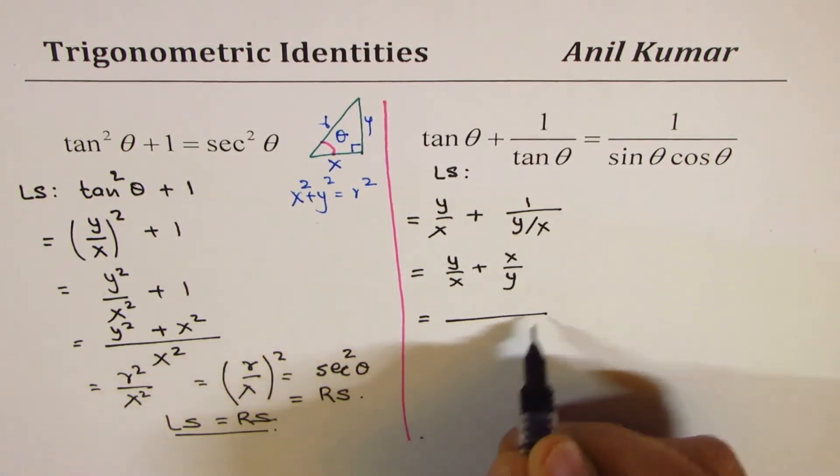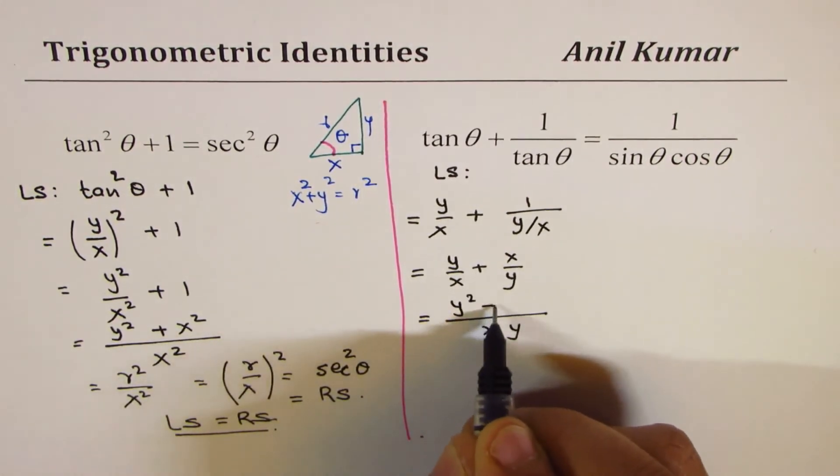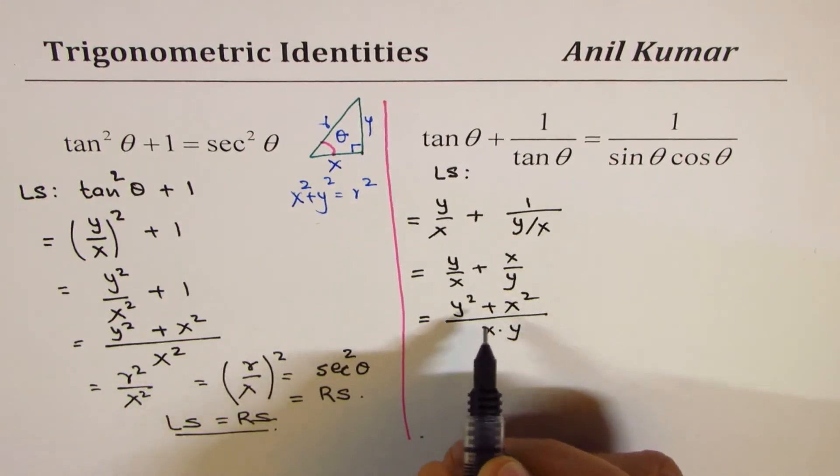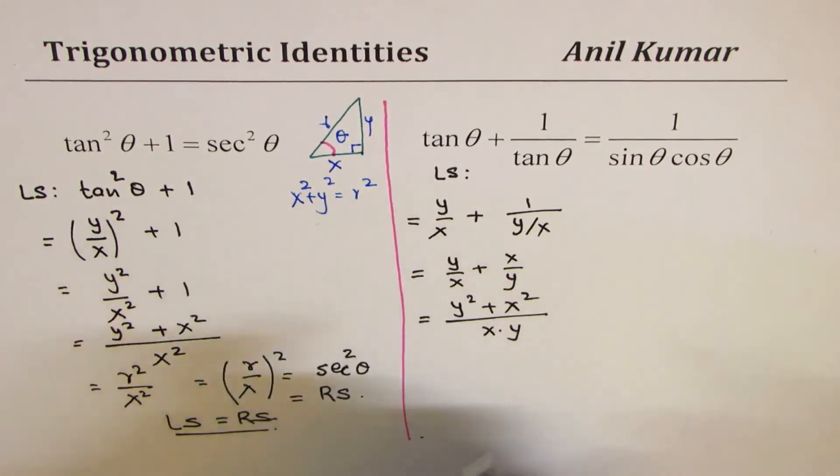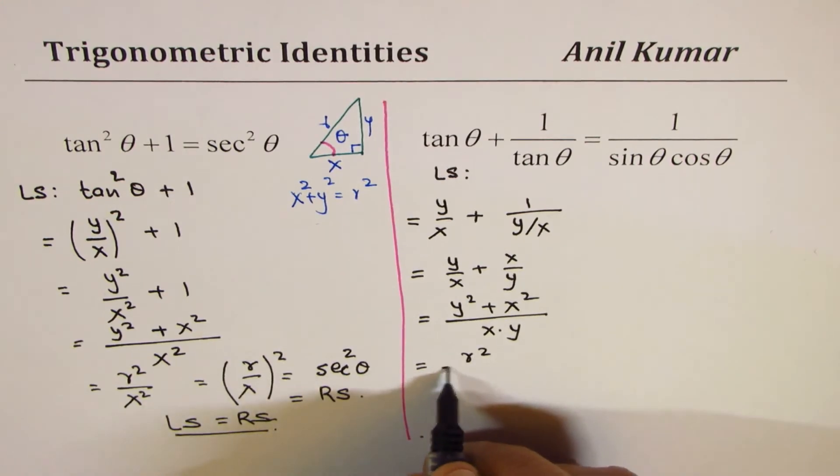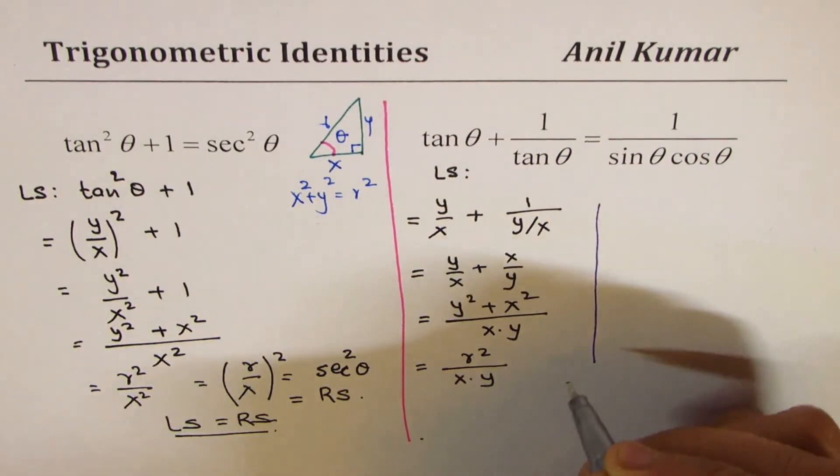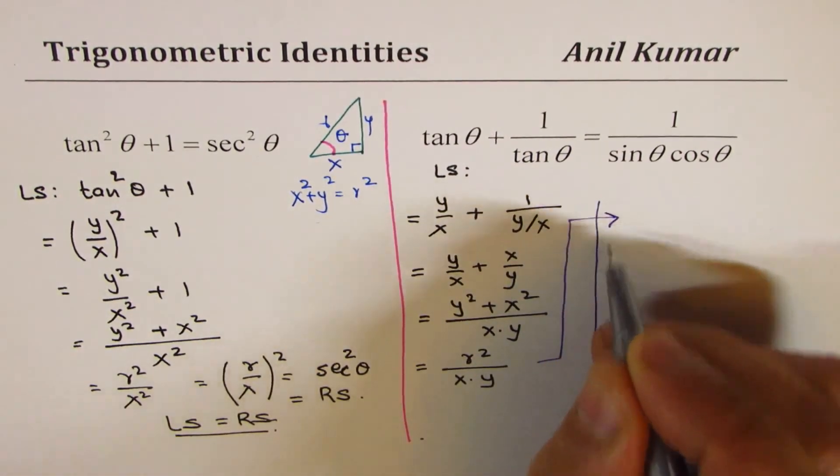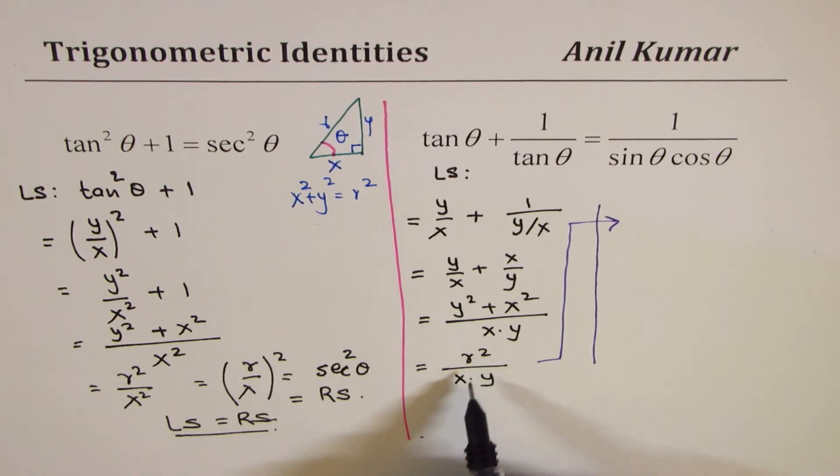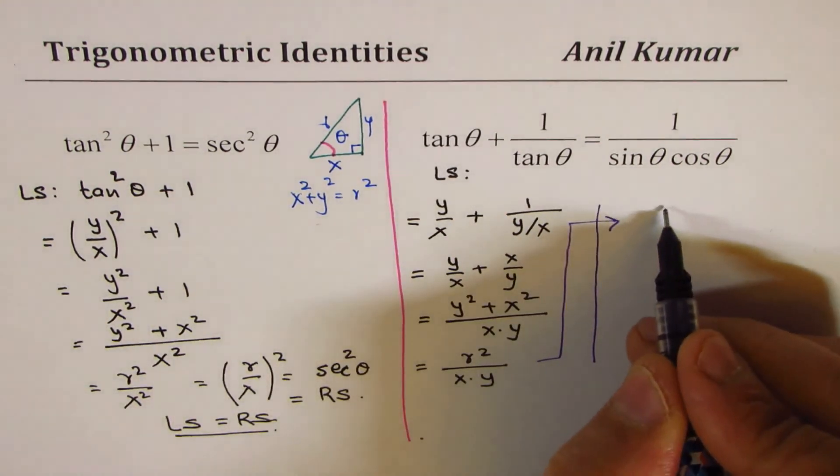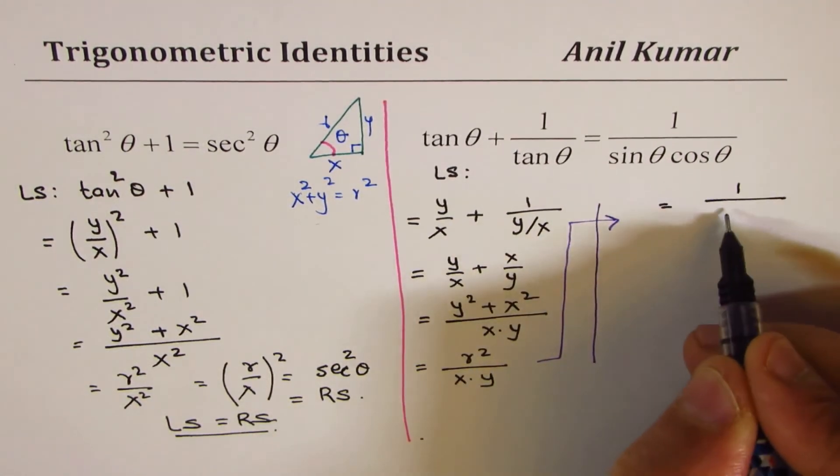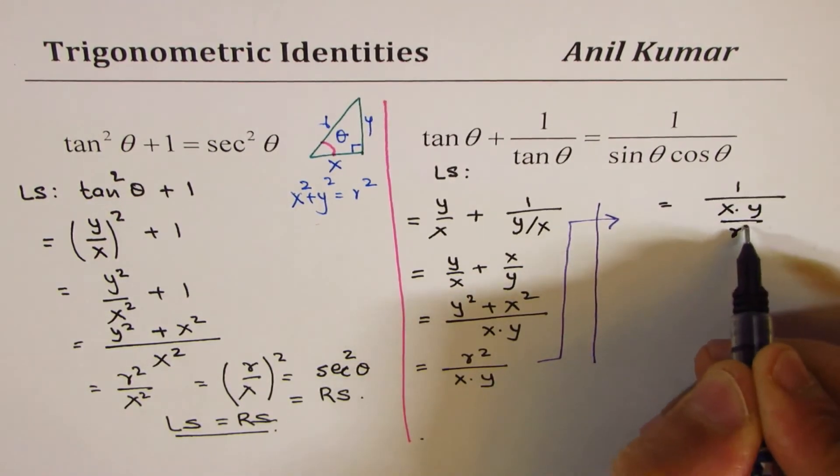We have y over x plus x over y. Taking common denominator, which will be x times y, we get y squared plus x squared. And as you know, this sum is r squared. So, I'll write this as r squared over x times y. Now, from here, what we can do is, let me take it to the right side. So, we could write this as equals to 1 over x times y over r squared, kind of like this.